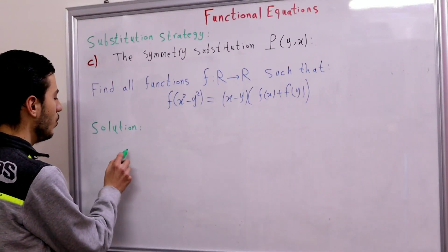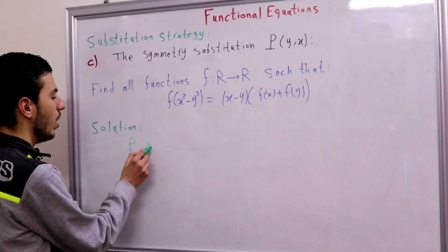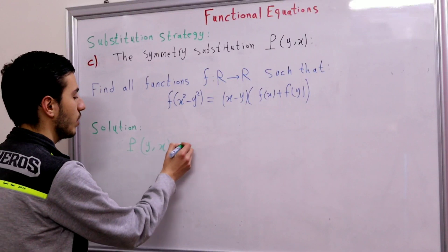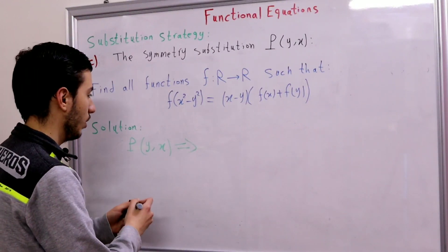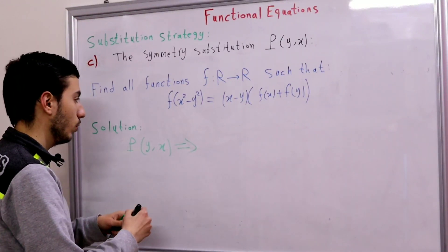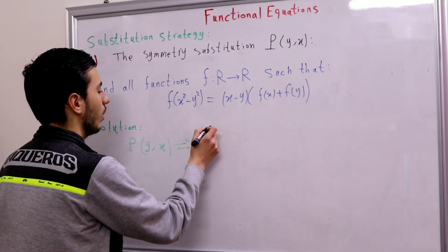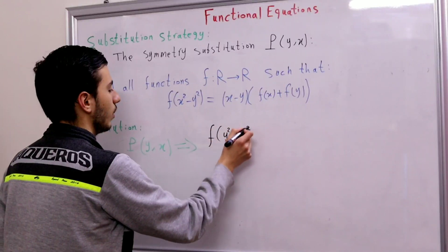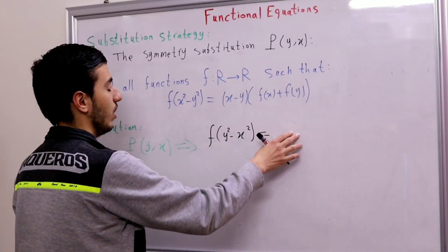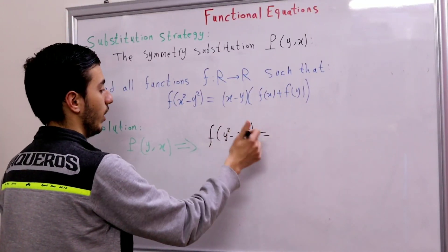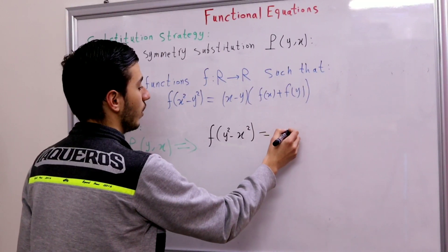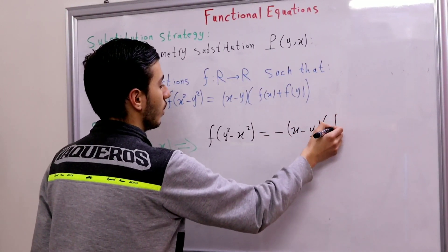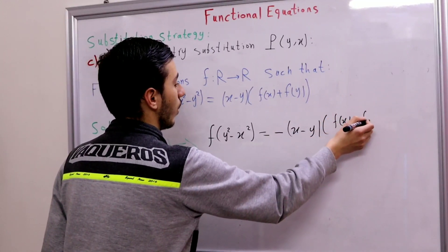So we'll apply substitution P(y, x) — substituting x with y and y with x. On the left-hand side we get f(y² - x²), and on the right-hand side this becomes negative, so we get: negative of (x - y) times (f(x) + f(y)).